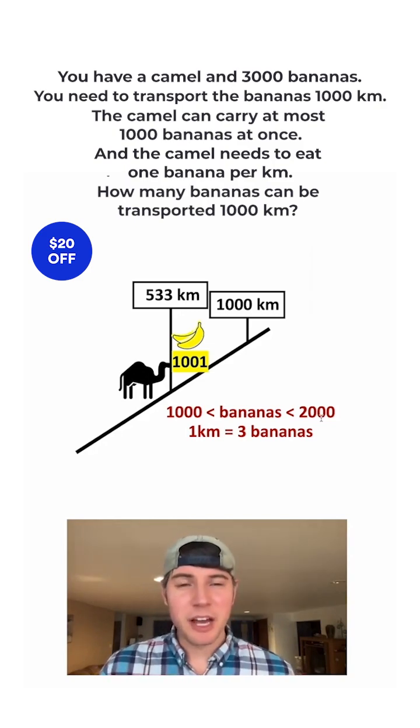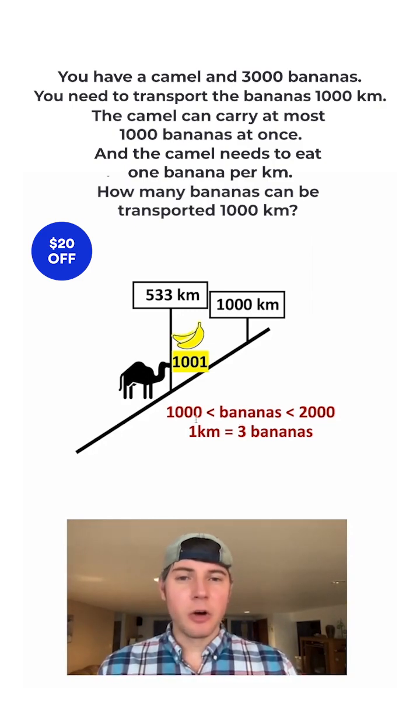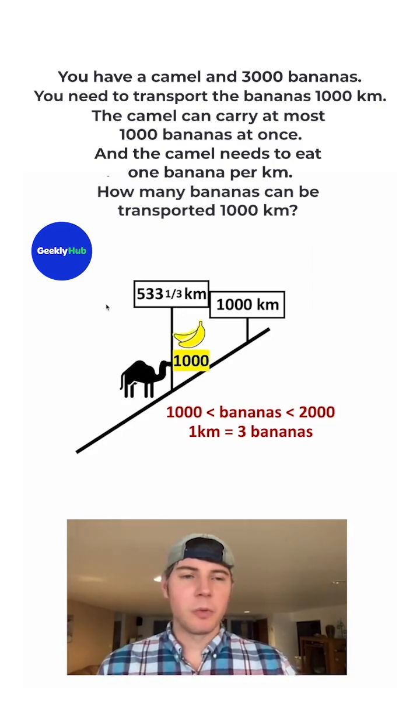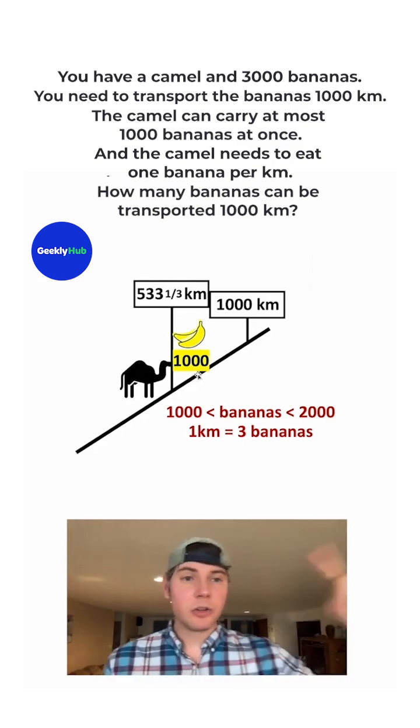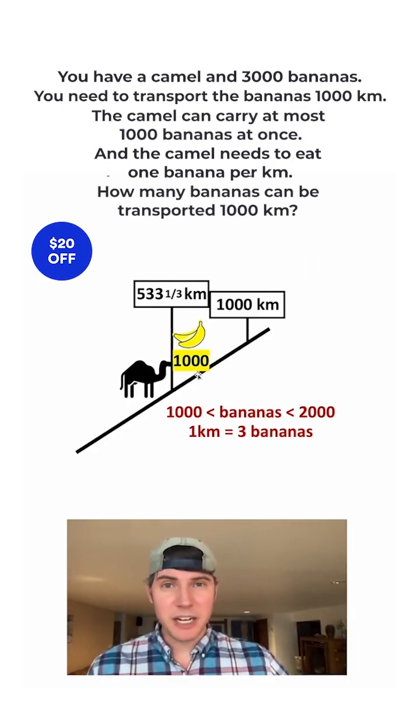So now let's jump ahead to 533 kilometers. We'll have 1,001 bananas. And then with one banana, he can only go one-third of a kilometer. So it's going to be 533 and one-third kilometers. He's now at exactly 1,000 bananas. At this point, he no longer needs to loop back because he can carry all the bananas that he has.